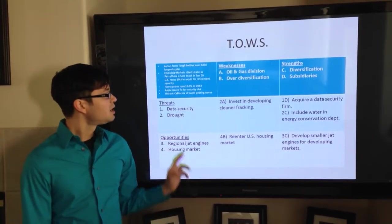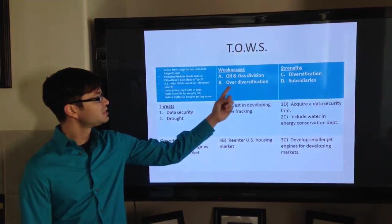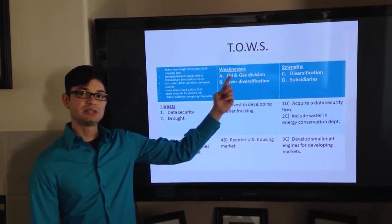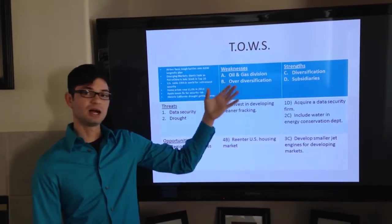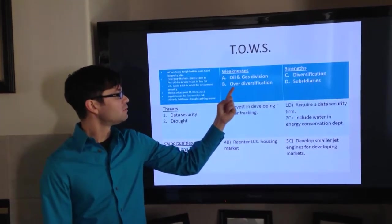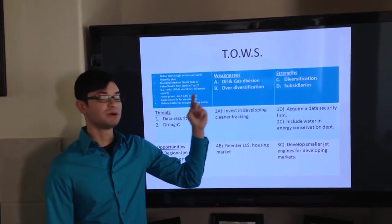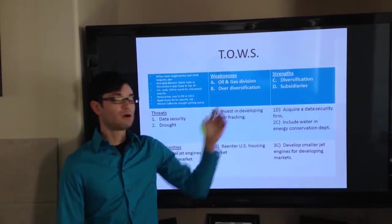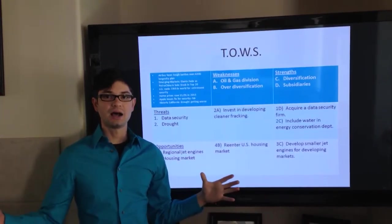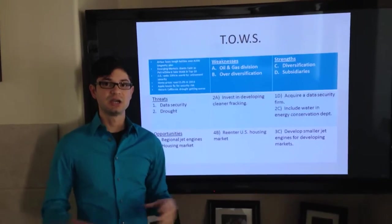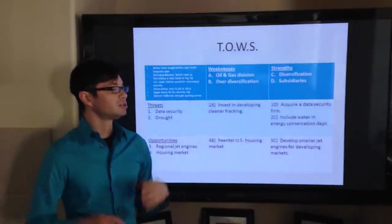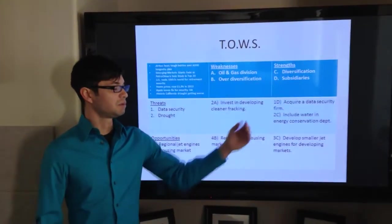For TOWS analysis, some of the things that I came up with for weaknesses were its oil and gas division. In terms of its number of sales, or percentage of sales, it's a lot lower than it should be. Its over-diversification can both be a weakness and a strength. A large subsidiary portfolio, a large patent portfolio can actually be very hard to manage many divisions, but it's also a good thing because you don't want to have all your eggs in one basket.